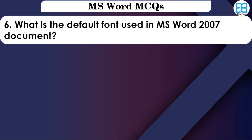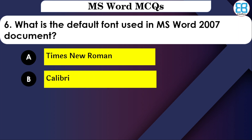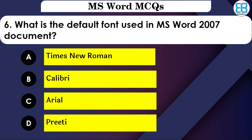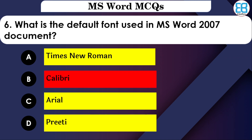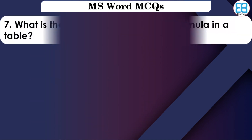What is the default font used in MS Word 2007 document? The options are: Times New Roman, Calibri, Arial, or PT. The correct option is Calibri — MS Word 2007's default font is Calibri.